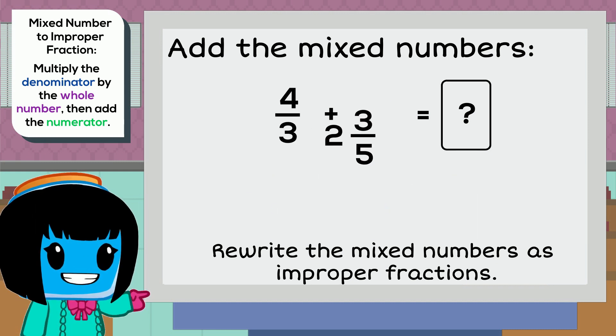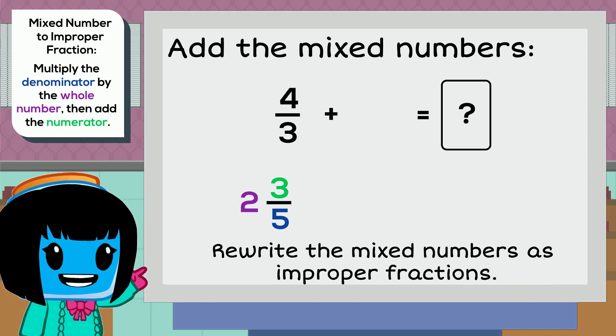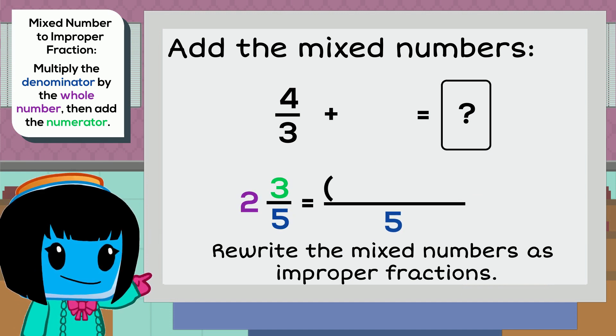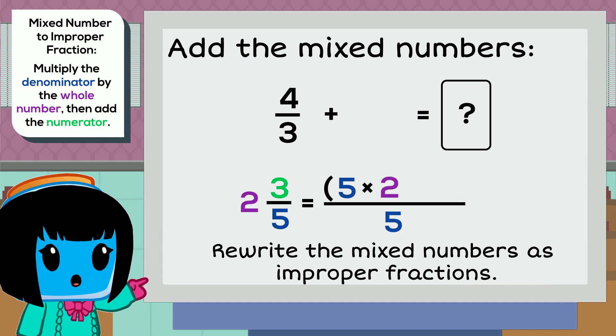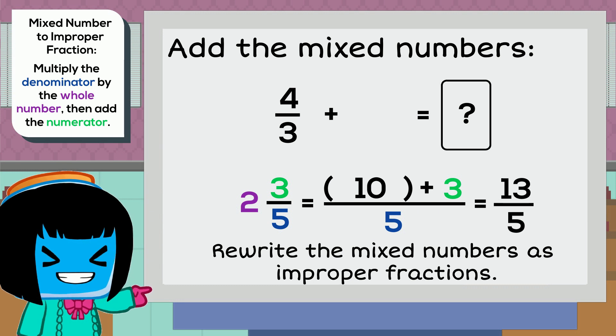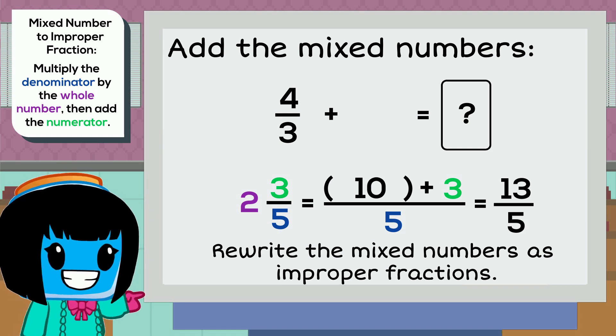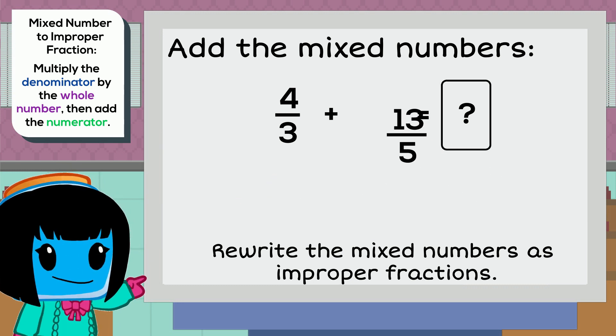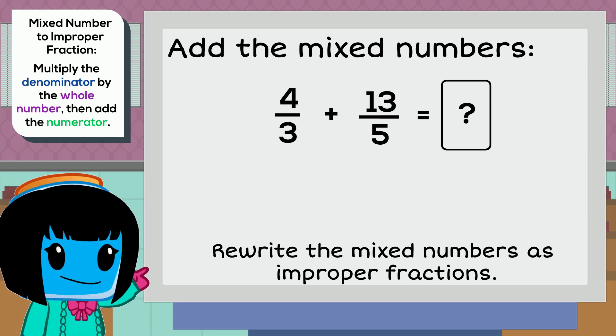Let's look at the other mixed number, 2 and 3 fifths. We multiply the denominator of 5 by the whole number 2, which gives us 10. We add the numerator 3 to make 13. So our mixed number for 2 and 3 fifths is 13 fifths, as an improper fraction.